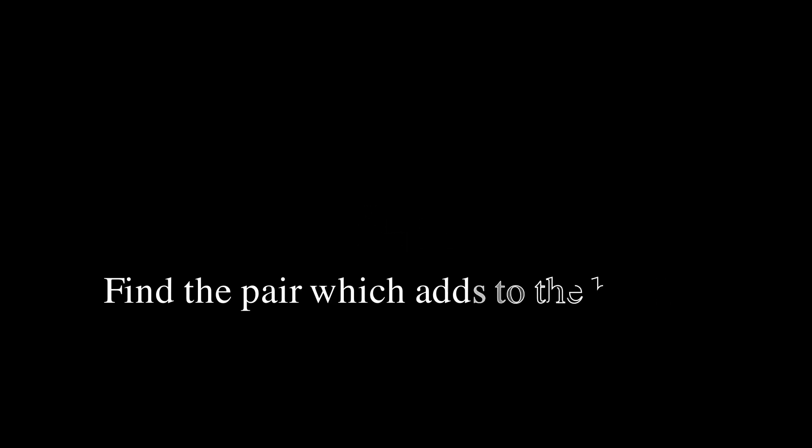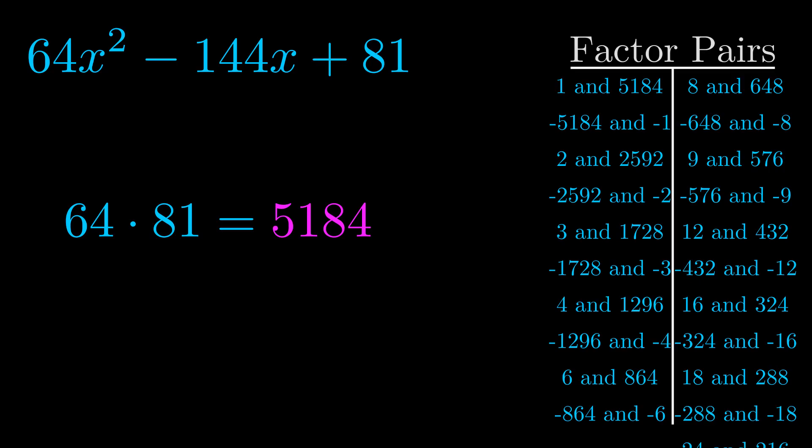The b value is the coefficient on the x term. That's the middle term, the one that we haven't done anything with yet. And really this is the only factor pair that we need.